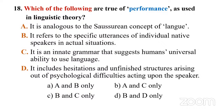Question 18: Which of the following are true of the term 'performance' as used in linguistic theory? A) It is analogous to the Saussurean concept of langue; B) It refers to the specific utterances of individual native speakers in actual situations; C) It is an innate grammar suggesting humans' universal ability to use language; D) It includes hesitations and unfinished structures arising from psychological difficulties acting upon the speaker. Options: A and B only, A and C only, B and C only, or B and D only.